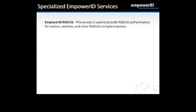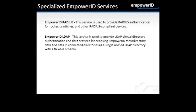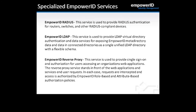There are specialized Empower ID services installed only when needed. The RADIUS service provides RADIUS authentication for routers, switches, and other RADIUS-compliant devices. The LDAP service provides LDAP virtual directory authentication and data services, exposing Empower ID meta directory data and connected directories as a single unified LDAP directory with a flexible schema — this is not for Active Directory communication, but for using Empower ID as a virtual directory. The Empower ID reverse proxy provides single sign-on and authorization for users accessing an organization's web applications, intercepting requests and authorizing access via role-based and attribute-based authorization policies.